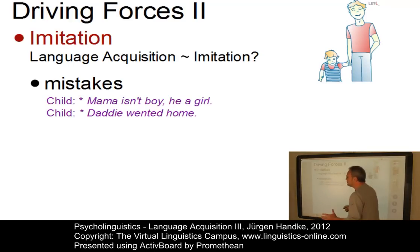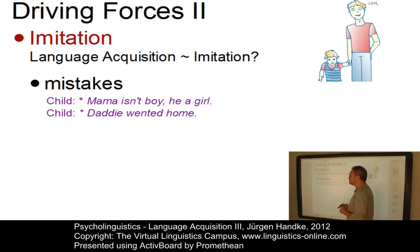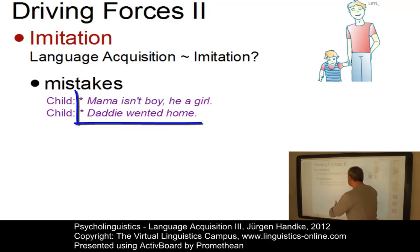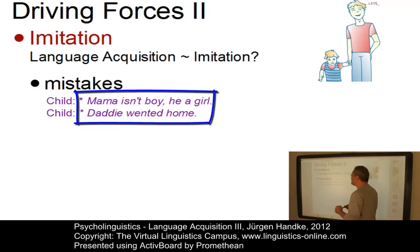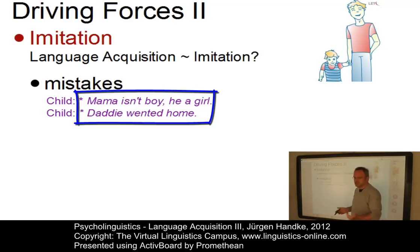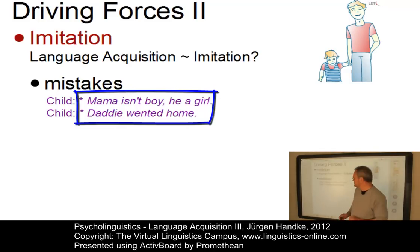First of all, children make mistakes that adults wouldn't produce. Here are two examples: a child says something like 'Mama isn't boy, he a girl,' or 'Daddy went at home' — utterances that adults would not produce in this form.